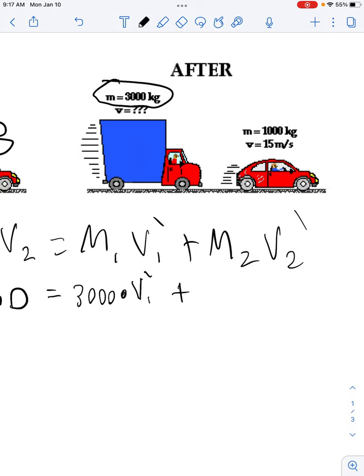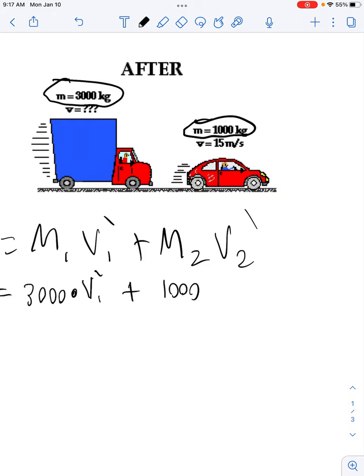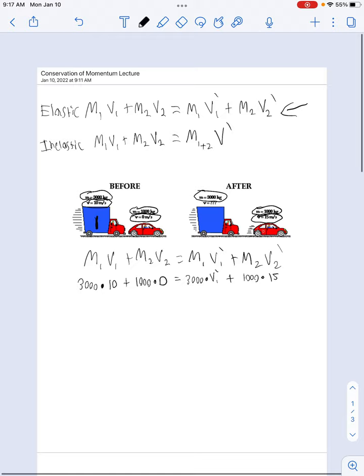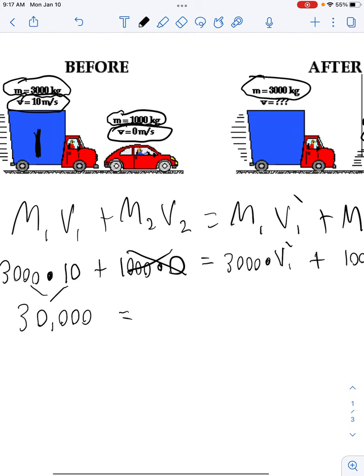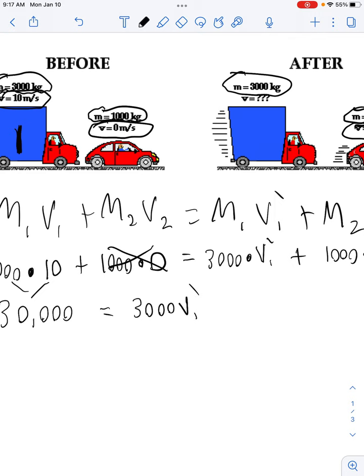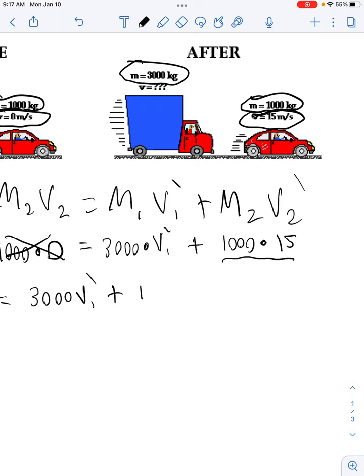Plus the mass of object 2, which is 1,000 kilograms, which you can see right here. And now, the little red car, object 2, is moving at 15 meters per second. So now we just use algebra to get V1 prime by itself. All right, 3,000 times 10 gives us 30,000, if you multiply these together. 1,000 times 0 is just 0. We can cross that off and just ignore it. Equal sign drops. Now we got 3,000 times V1 prime, which I guess we can just kind of combine like this. Plus 1,000 times 15, which is 15,000.